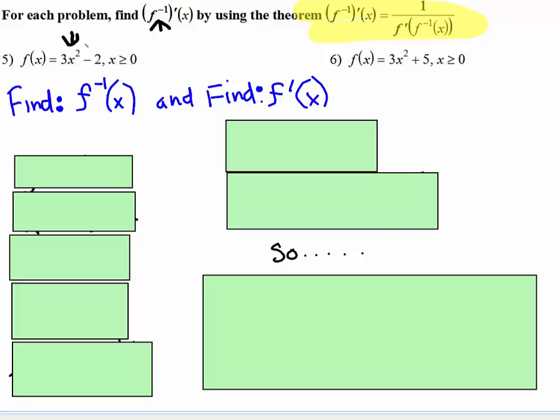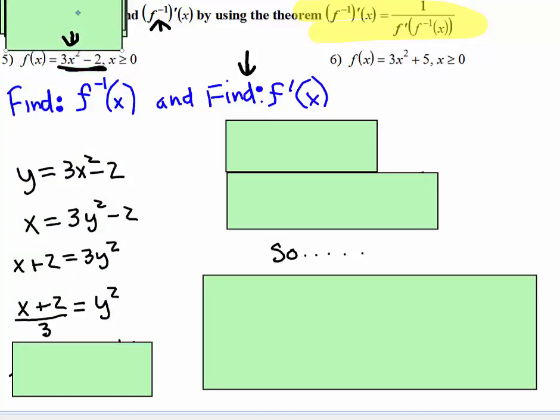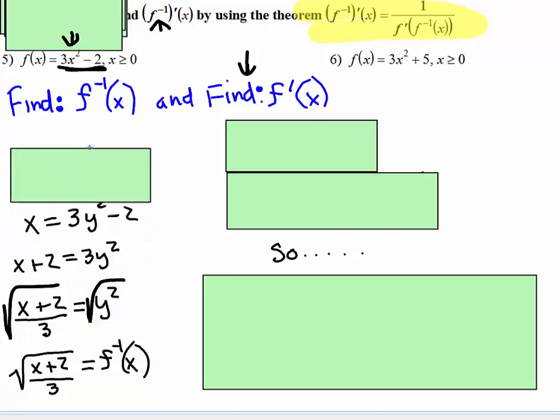So here's our function, we need to find the inverse, and we need to find the derivative of this original function. To find the inverse, you first rewrite it as y equals, then you swap the x's and y's, then you solve for y. So we add 2 to both sides, divide both sides by 3. At the very last thing we're going to do, since this is y squared, we're going to take the square root of both sides, and then once we do that, we can rewrite it with the inverse notation.